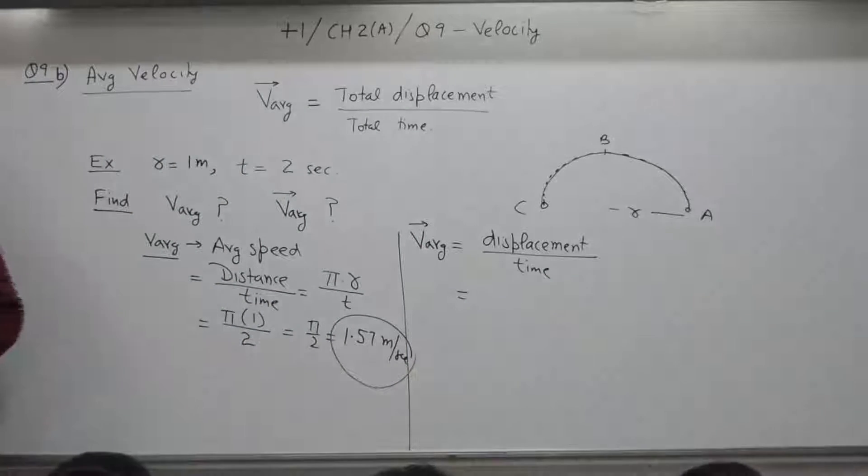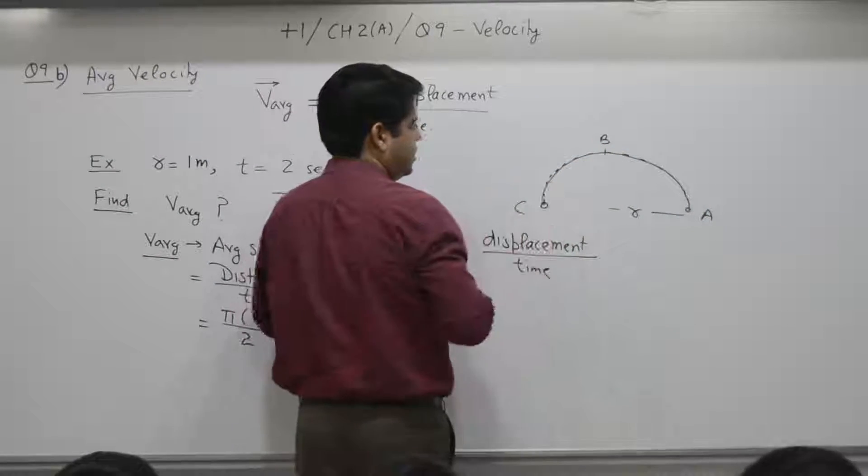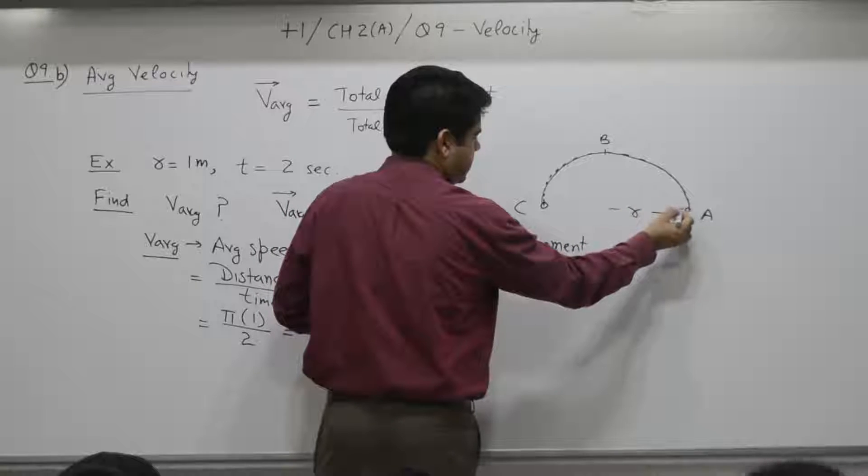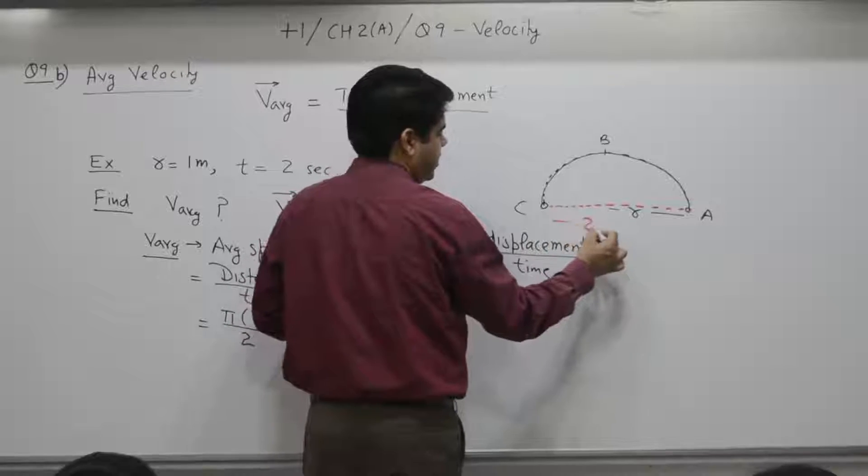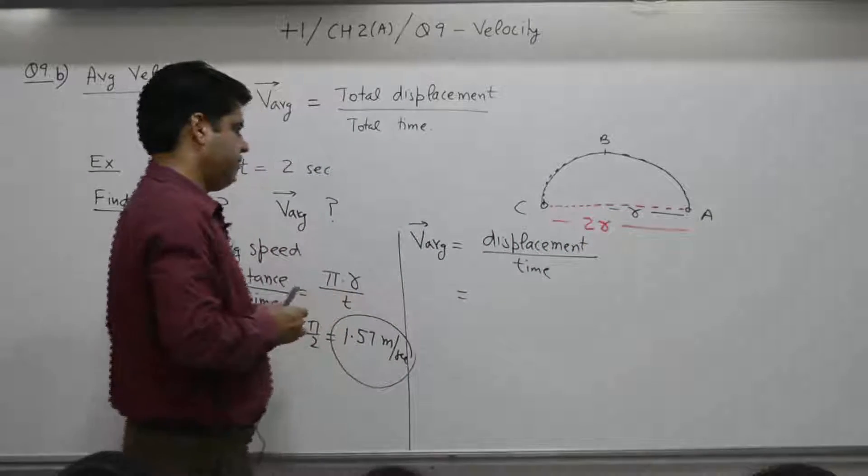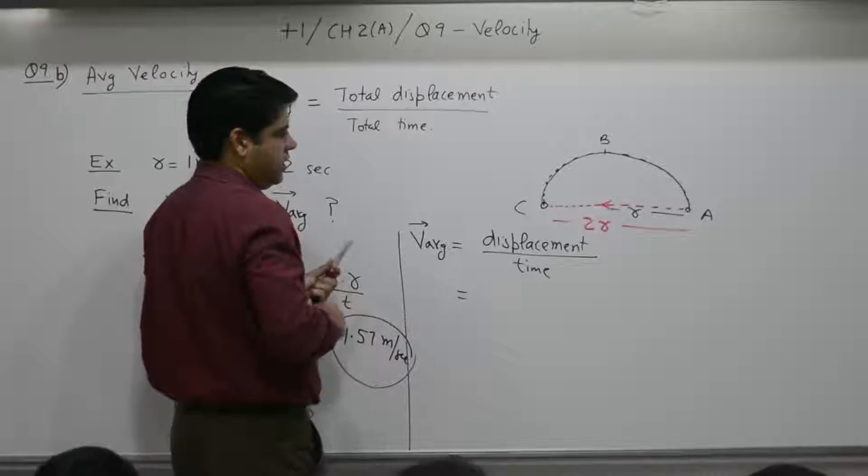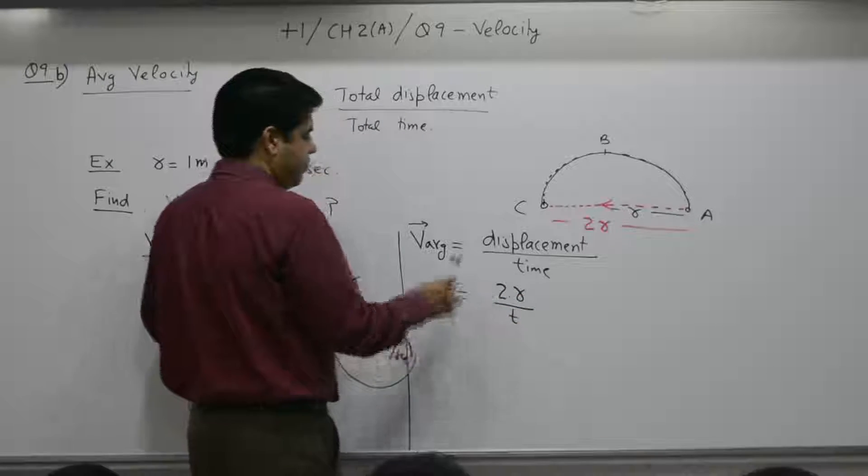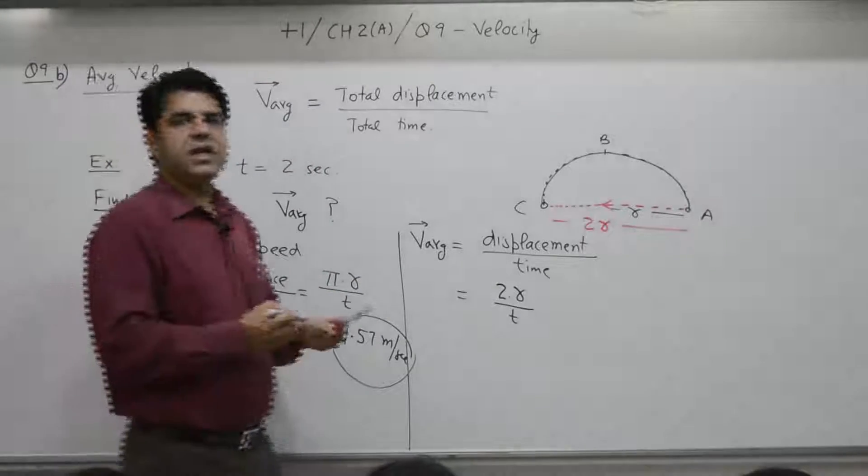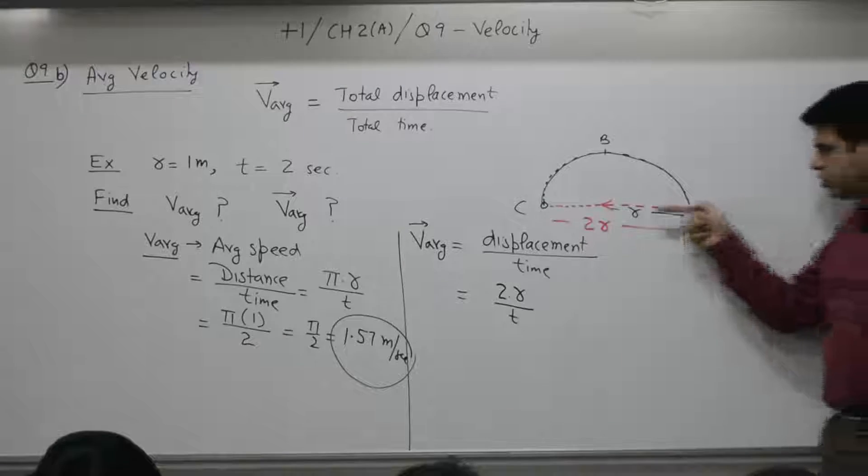Average velocity is equal to displacement by time. Displacement is, particle has moved from A, B, C. Displacement is A to C. It is 2r.